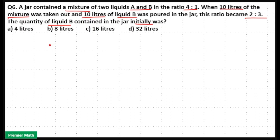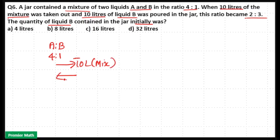So there is a jar containing a mixture with liquid A and B in the ratio 4 is to 1. Initially A and B are in the ratio 4 is to 1. A person takes out 10 liters of the mixture and adds 10 liters of liquid B to it. After these two processes, the 4 is to 1 ratio becomes 2 is to 3. We need to find out the initial quantity of liquid B — that is, 1 part out of these 5 parts.